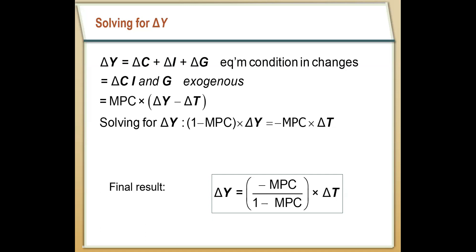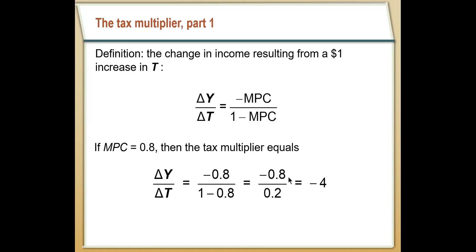Importantly, the multiplier here is negative. If we raise taxes — if ΔT is greater than zero — income is going to go down. If we cut taxes, people are going to start spending more, and income is going to go up. Our tax multiplier — the total amount of income increase or decrease from a change in taxes — is negative MPC over one minus MPC. Taking the same example where MPC equals 0.8, a $1 increase in taxation is going to decrease output by $4, because that $1 increase in taxes cuts total spending, spending falls, income falls, and it feeds on itself again.